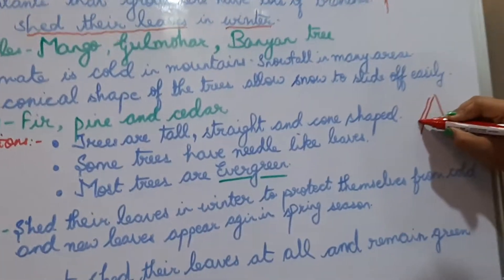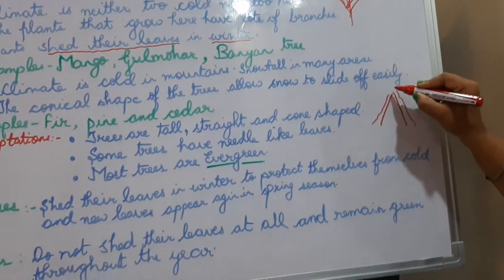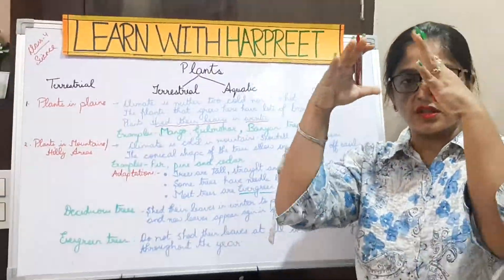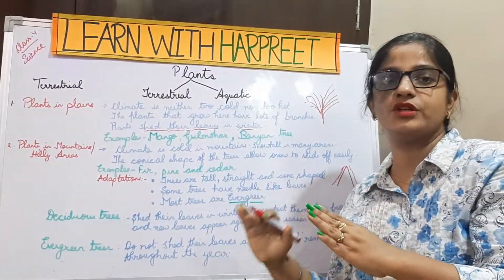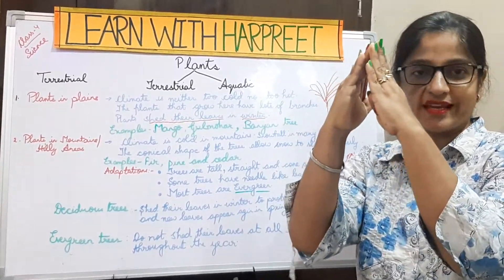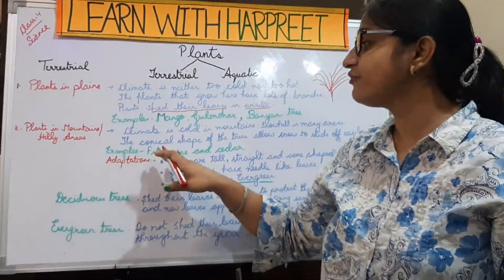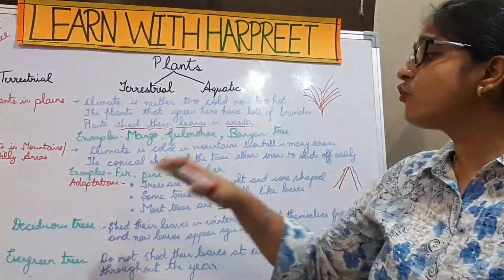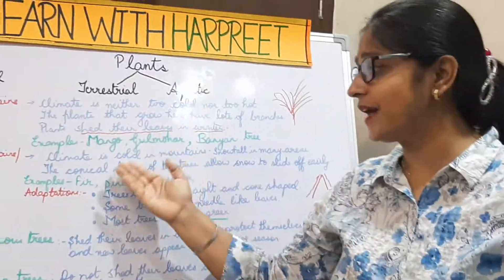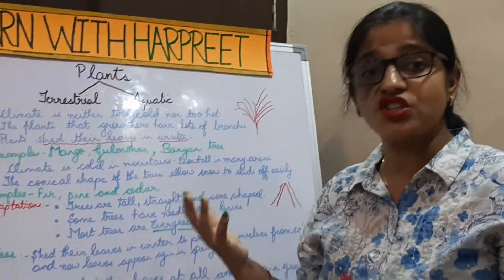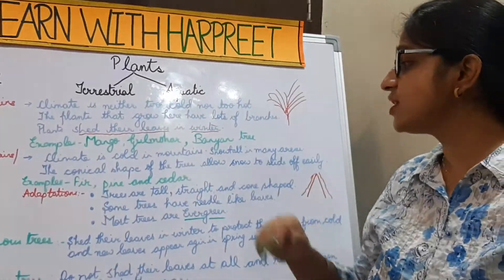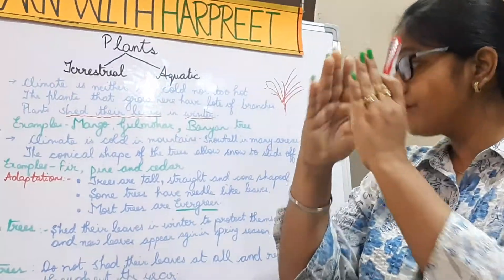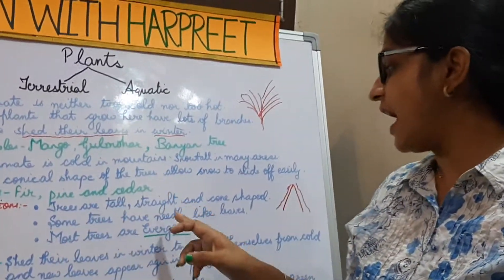The snow which deposits on the tree slides off easily because of the conical shape. Examples are fir tree, pine tree, and cedar tree. Now, what adaptations do these plants have? The first feature is these trees are tall, straight, and cone-shaped.